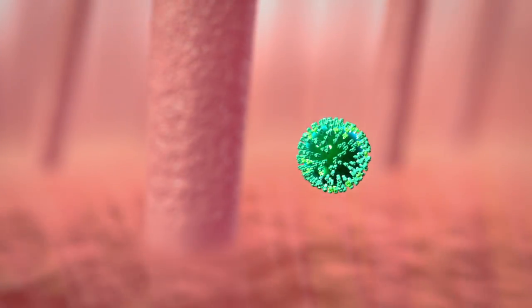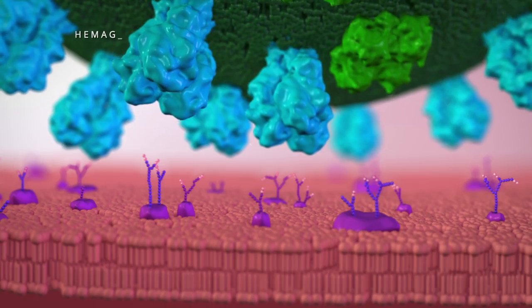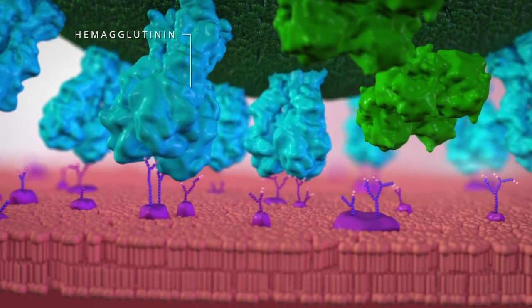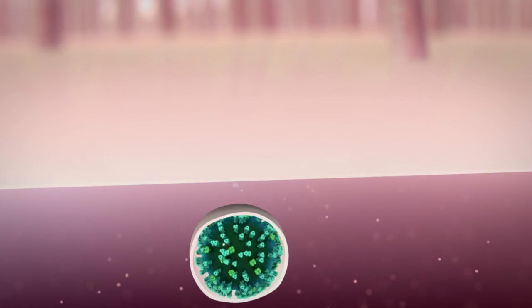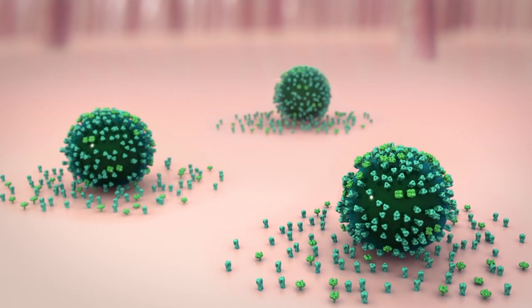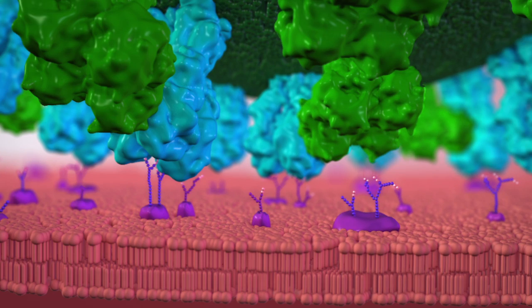The virus displays two surface proteins. Hemagglutinin helps it attach to an epithelial cell and become engulfed. New viruses bud from the cell membrane, however, they remain attached by the hemagglutinin.